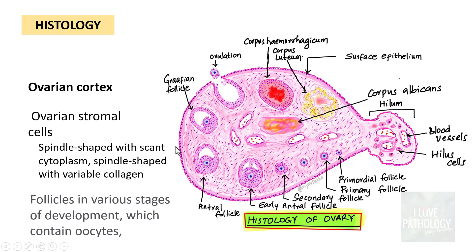The cortex of the ovary contains the ovarian stroma as well as follicles in various stages of maturation. The ovarian stroma is composed of spindle-shaped cells with scant cytoplasm and variable amounts of collagen. The follicles contain oocytes and progress through developmental stages: primordial follicle, primary follicle, secondary follicle, early antral follicle, well-developed antral follicle, and the Graafian follicle.